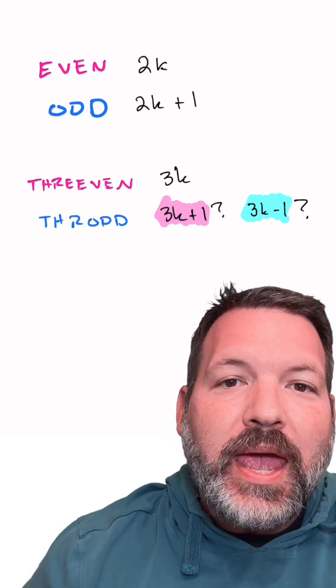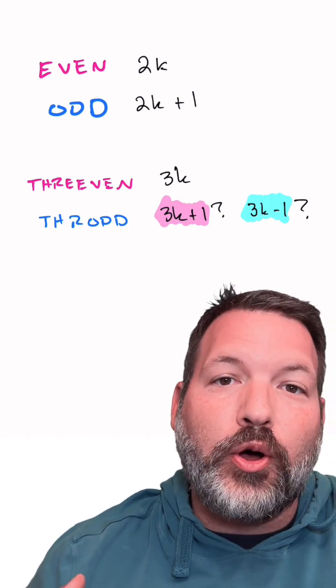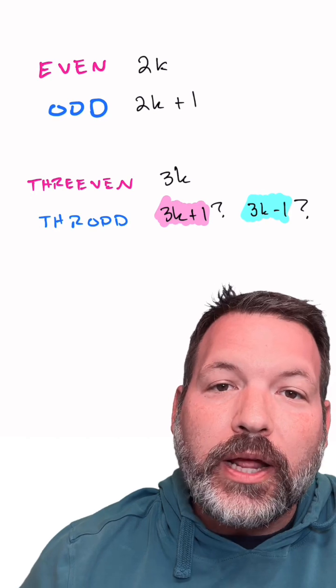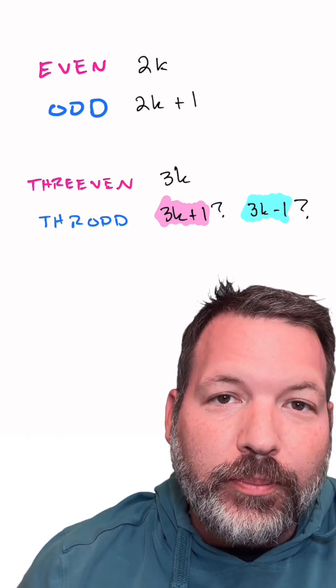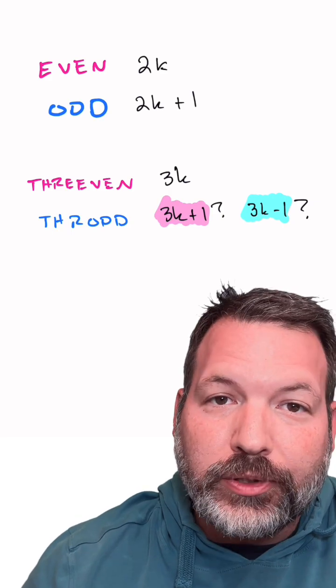Unlike the odd numbers, we can tell the difference between certain kinds of throd numbers, between what I call throd up and throd down numbers. Throd up numbers are numbers that are one greater than a multiple of three, and throd down numbers are numbers that are one smaller than a multiple of three.